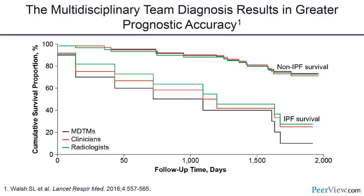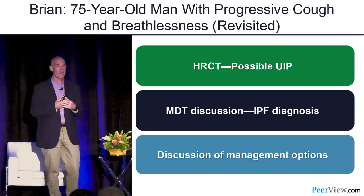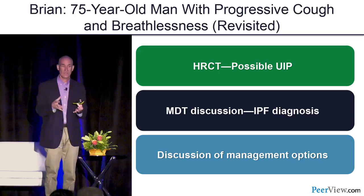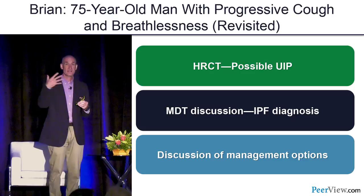Brian's HRCT showed possible UIP; after MDT discussion the overall decision was a diagnosis of idiopathic pulmonary fibrosis. Brian will now come back to clinic to discuss therapeutic options. We've taken a broad picture and honed it down to defining IPF and how to treat patients better.